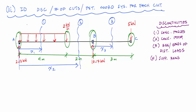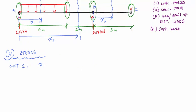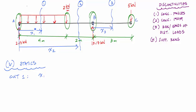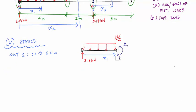Starting with cut one, the coordinate x1 ranges from zero to four meters. Drawing the FBD by making the cut and choosing the left side, the distance from origin A to the cut is x1. I assume positive internal moment M1 and positive internal shear V1 on the left side of the cut, both as functions of x1.